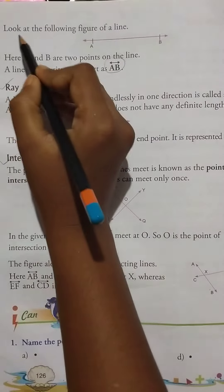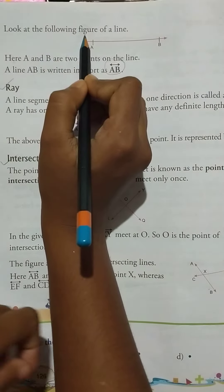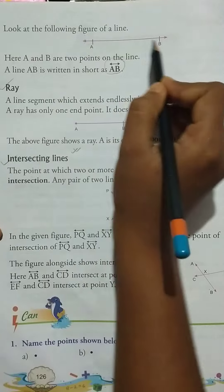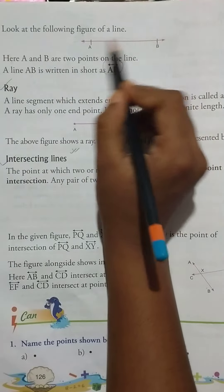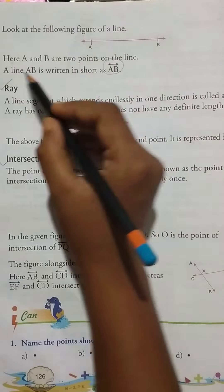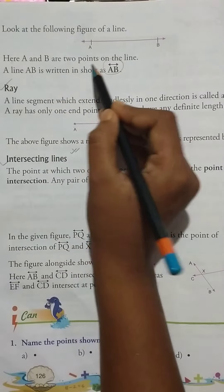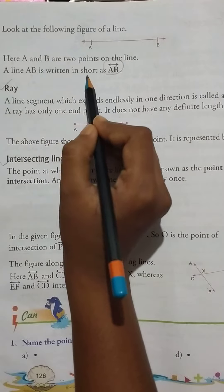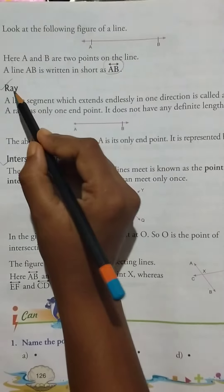Look at the following figure of a line. No endless points. Only definite length. Here A and B are two points on the line. A line AB is written in short as ray.